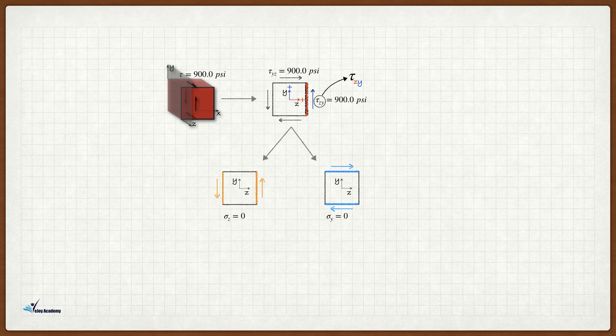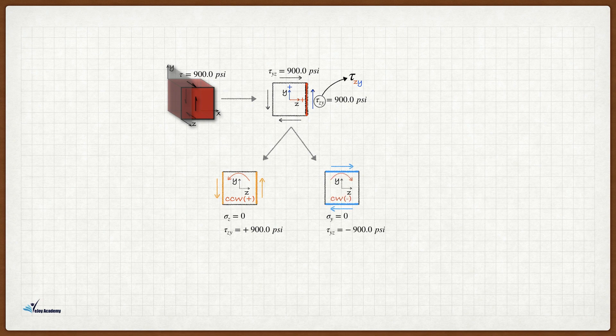For the shear stress, the shear couple on the left side causes counterclockwise rotation so it is considered positive. The shear stress on the right side though is negative because it causes clockwise rotation.